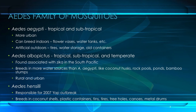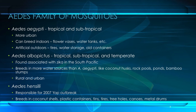Both Aedes aegypti and Aedes albopictus have been implicated in large outbreaks of Zika virus in the past. Aedes aegypti tends to be confined to tropical and subtropical regions, whereas Aedes albopictus can be found in tropical, subtropical, and temperate climates. Here in the South Pacific, we have Aedes hensalai, which was implicated in the spread of Zika virus in the Federated States of Micronesia in 2007, and Aedes polynesianus, which was suspected to spread Zika virus in French Polynesia in 2013.